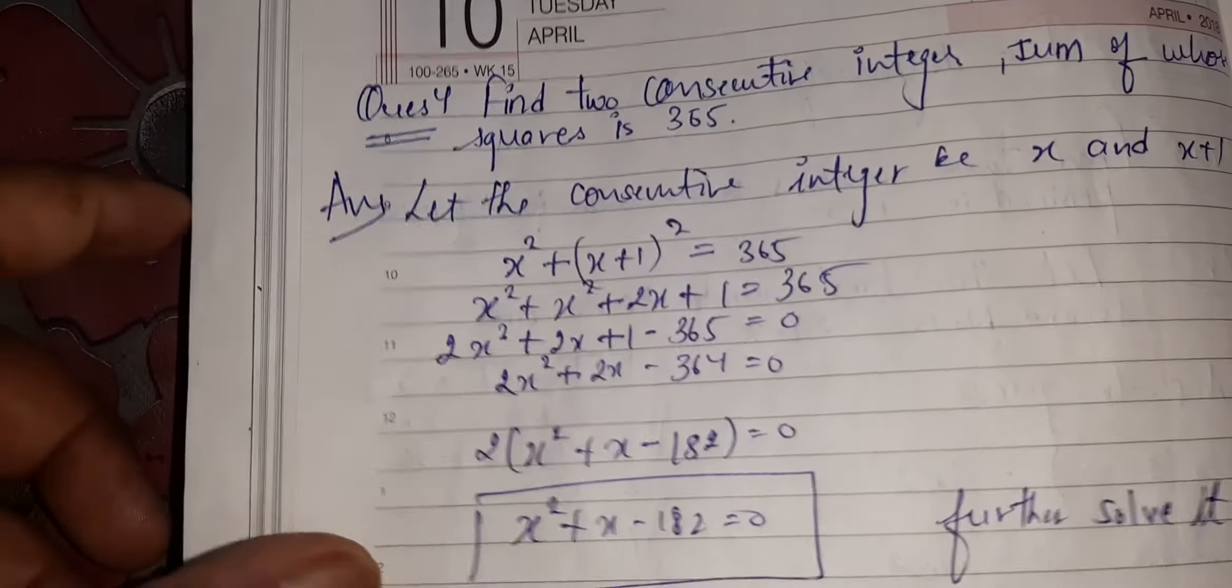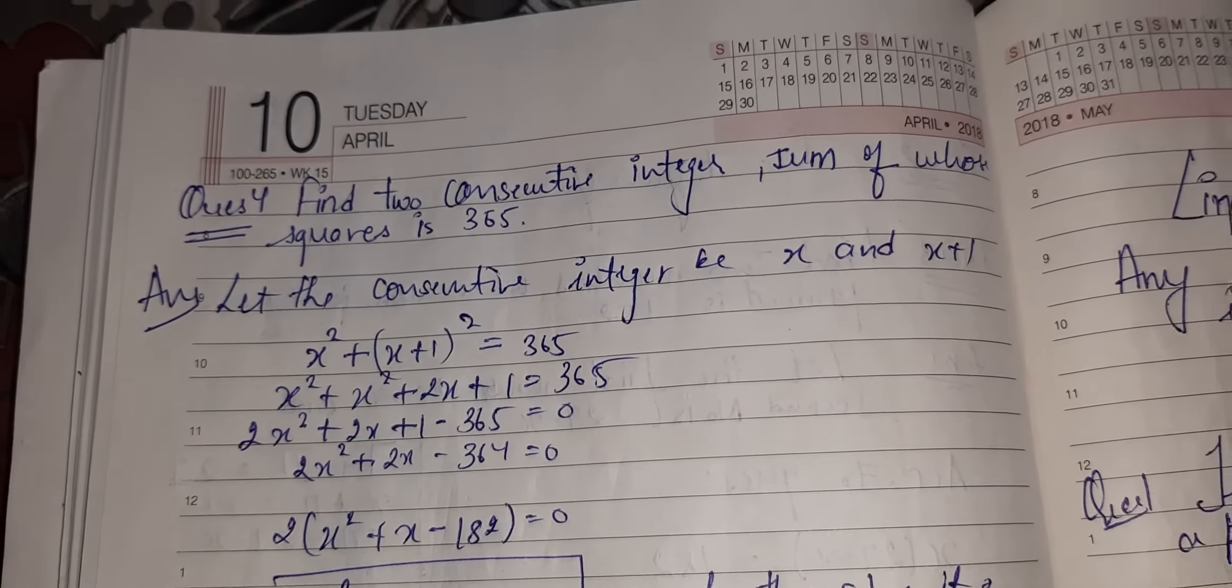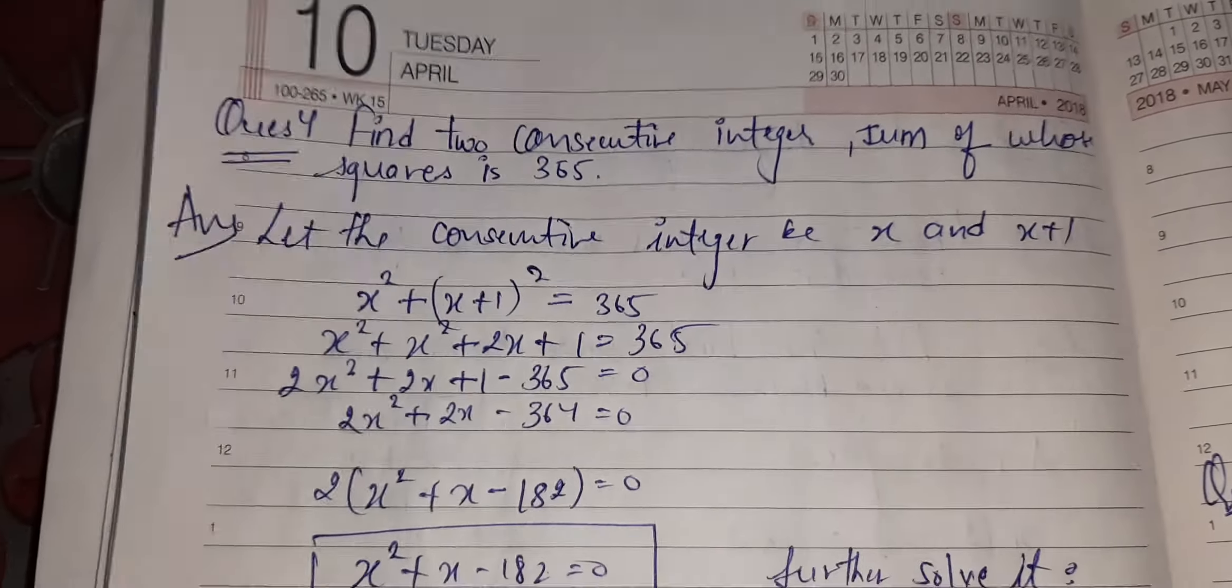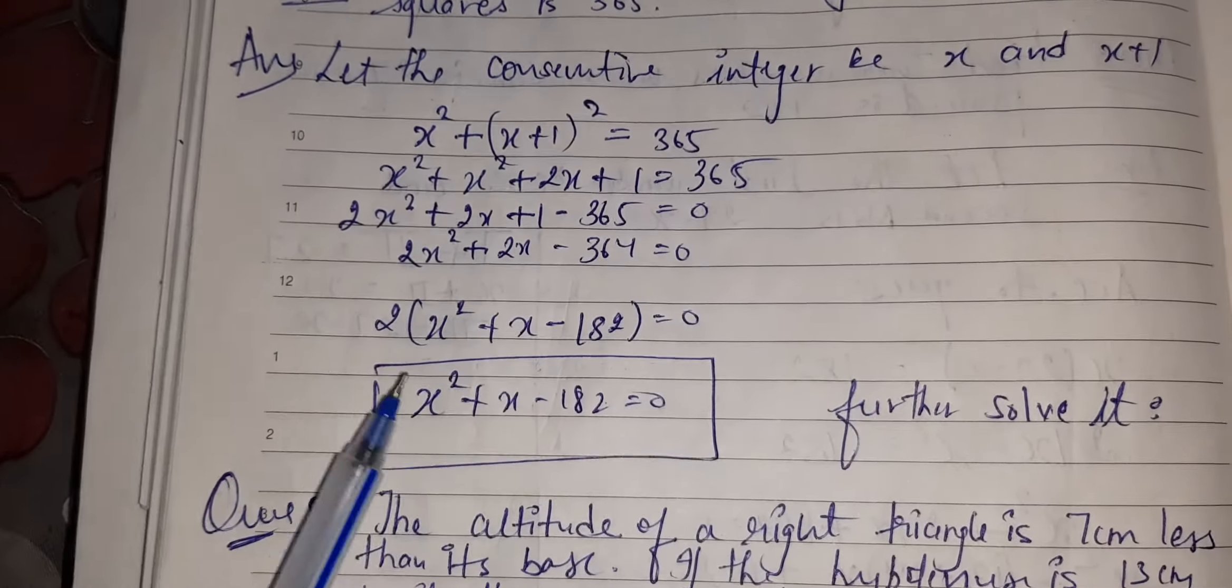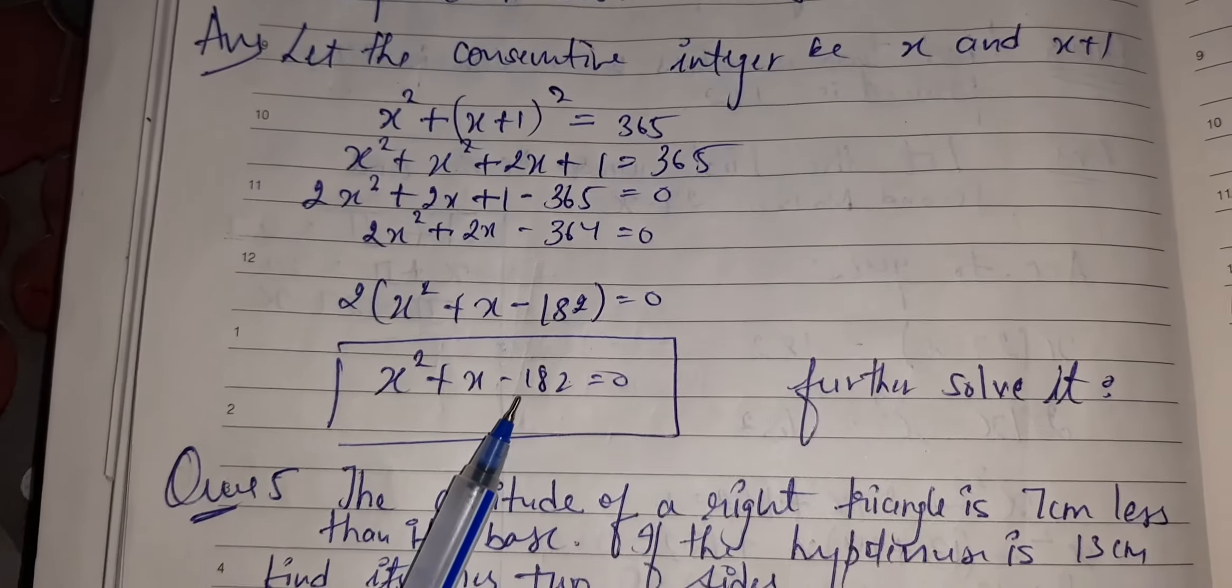The next question: find the consecutive integers, sum of whose squares is 365. Consecutive integers we have already studied: x and x + 1. The square of them is 365. I have solved it. I have got the equation. Just further solve this equation by splitting the middle term. Got it?